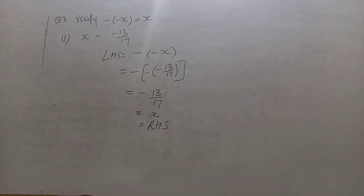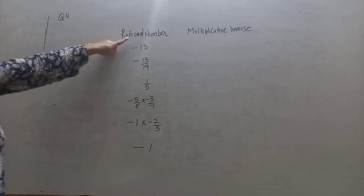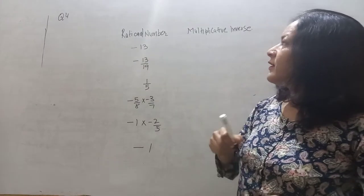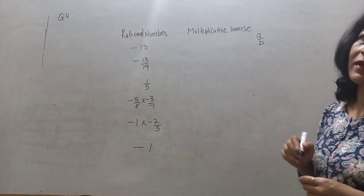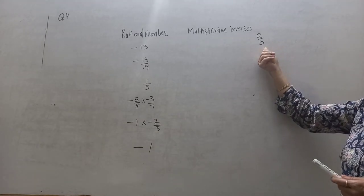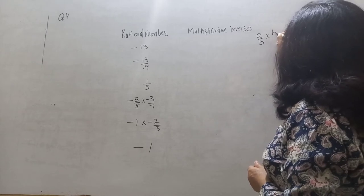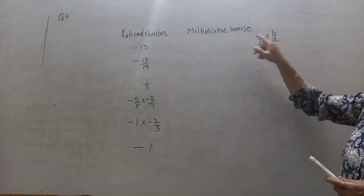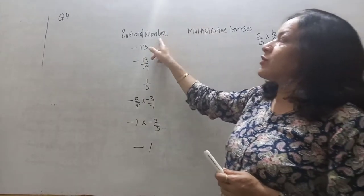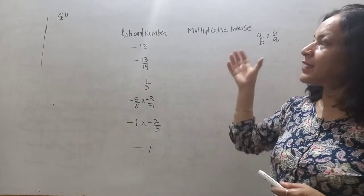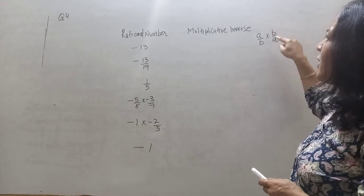Now question number 4: we have to find the multiplicative inverse. If a upon b is any rational number, then its multiplicative inverse is exactly opposite — b upon a. The multiplicative inverse of any rational number is the reciprocal of that number. When you multiply both, b cancels with b and a cancels with a, giving 1.